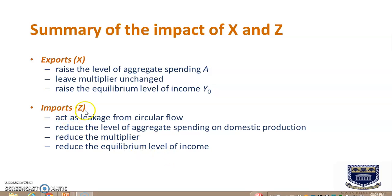Imports, on the other hand, we know is a leakage in the circular flow of income and spending, so it will serve to reduce the level of aggregate spending on domestic production. If we are of course purchasing imported goods, we are not spending on domestically produced goods. It also reduces the multiplier. We saw that the marginal propensity to import M enters the multiplier formula in the denominator, so it does affect the multiplier. And the larger M is, the smaller the multiplier will become. And lastly, imports reduce the equilibrium level of income Y0.